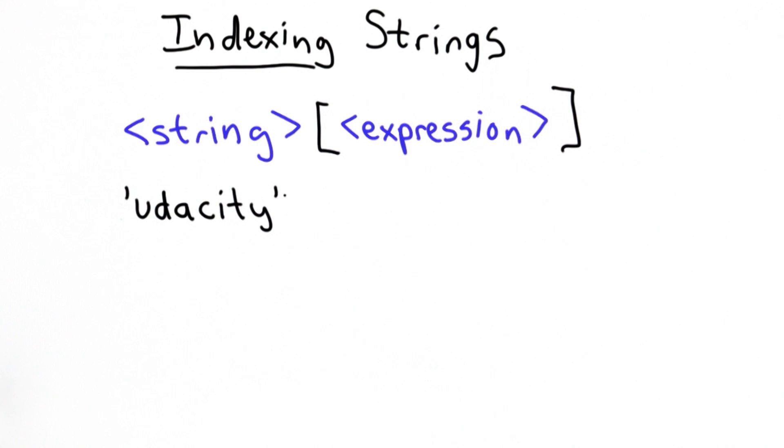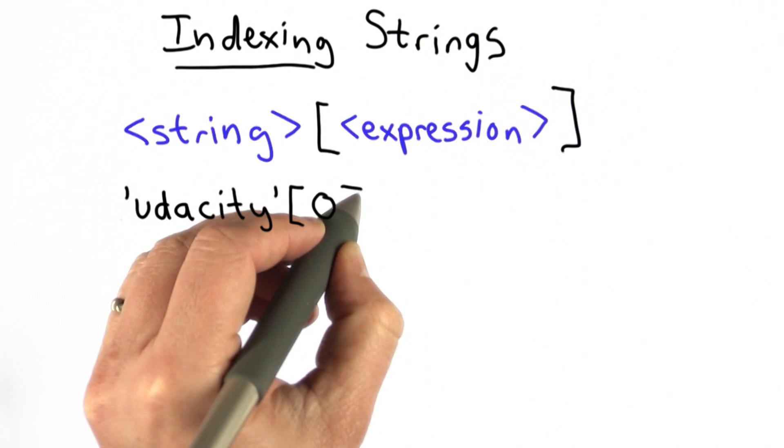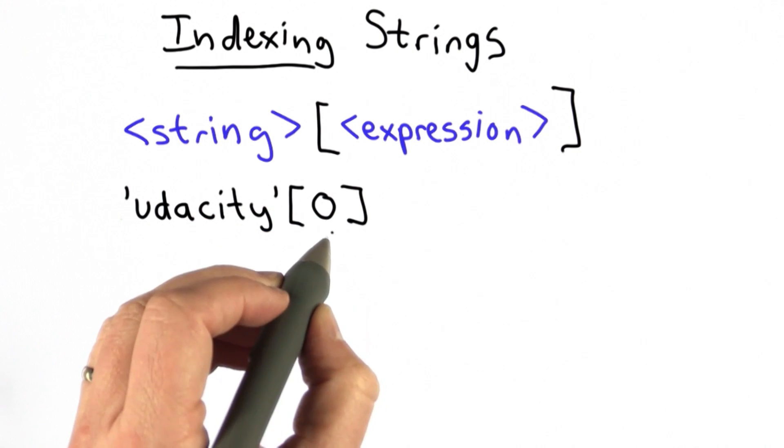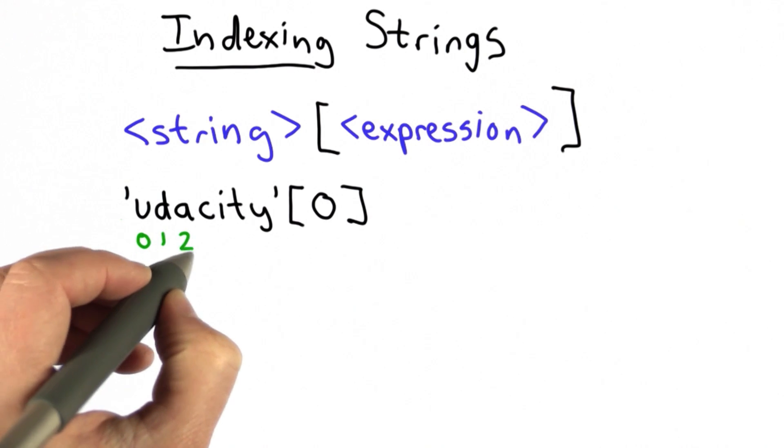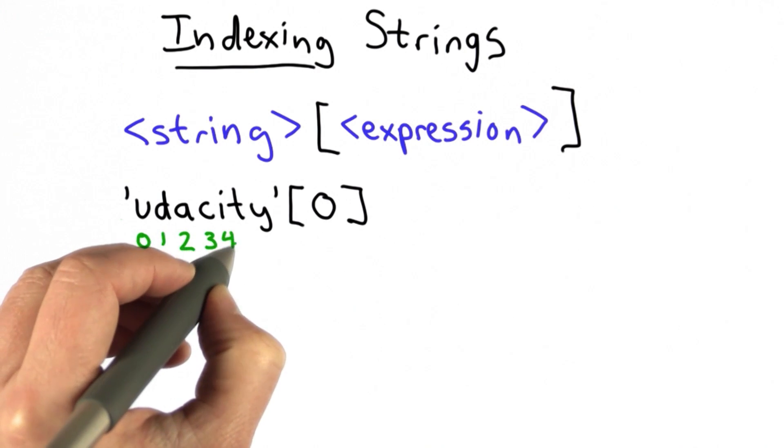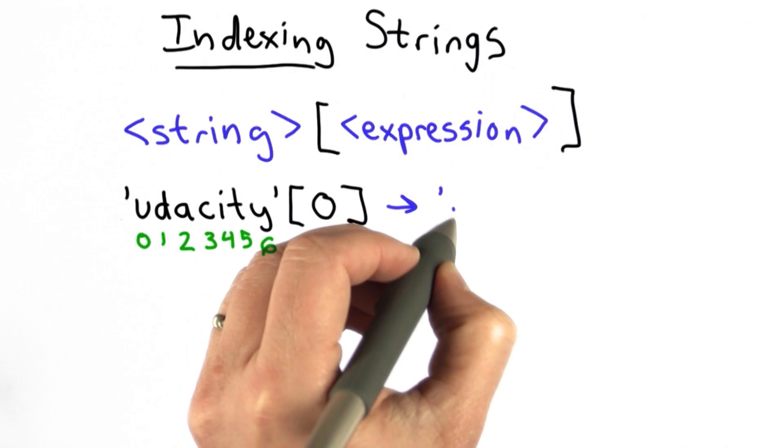If we had the string Udacity, and we used the square bracket with the value 0, that would select the 0th character from the string. The characters of the string are indexed starting from 0. So the result of index 0 is the string with just the letter U.